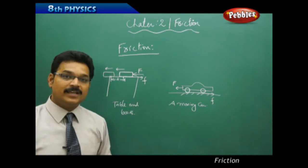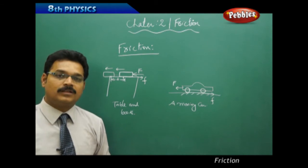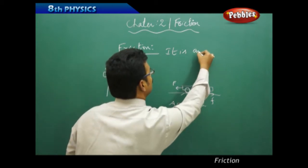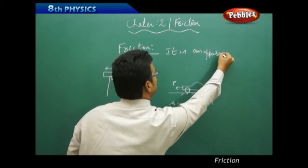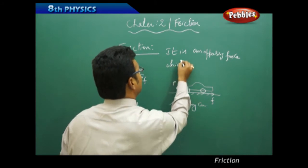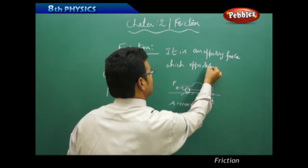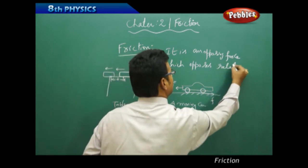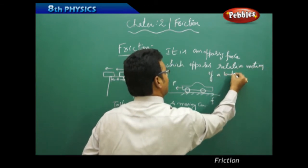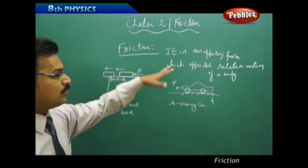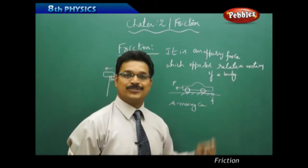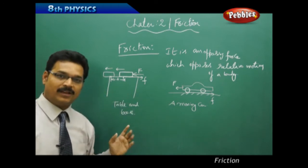Friction opposes the relative motion of a body. Let me write the definition. I will explain what relative motion means in two to three minutes, so come back to the examples again. By the definition, friction is the opposing force — these two forces are opposing the motion of the bodies, that's why those two forces are called friction.